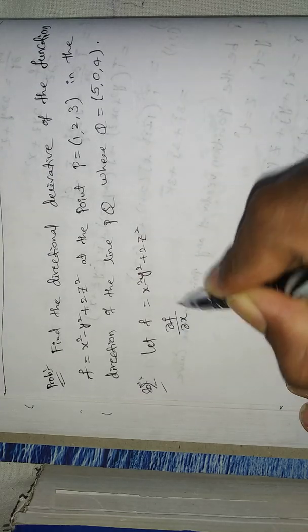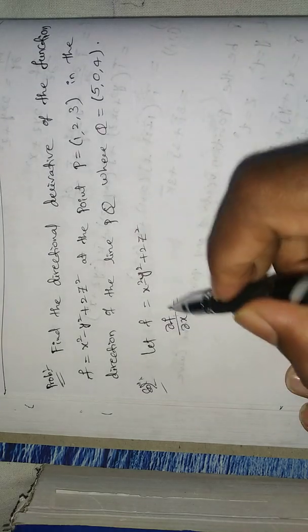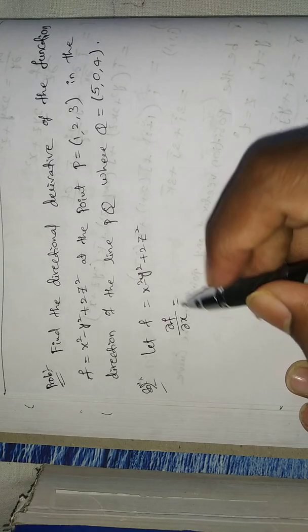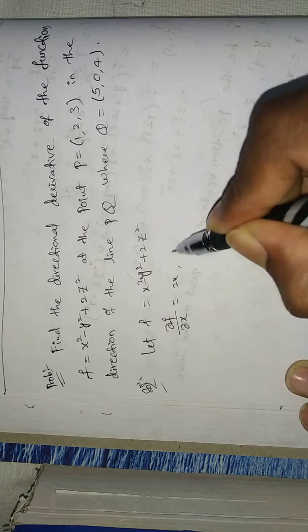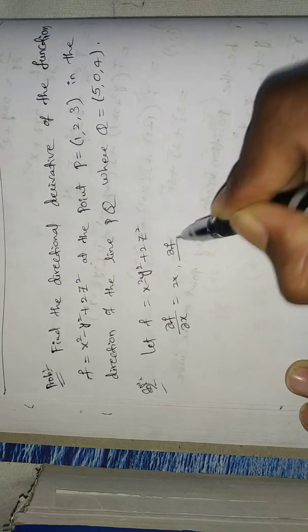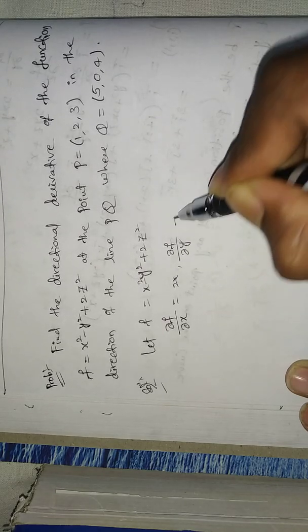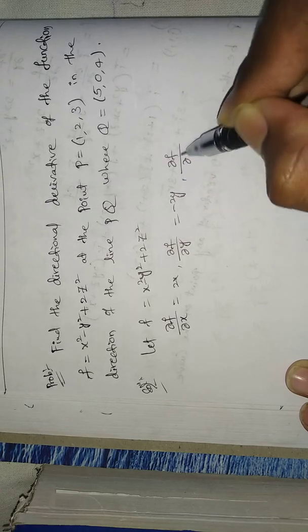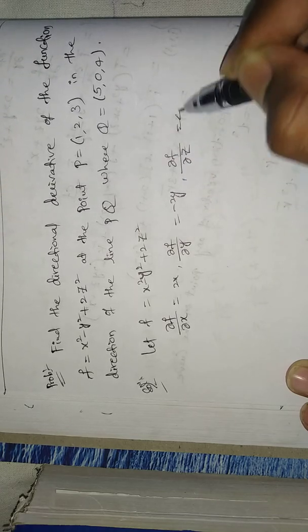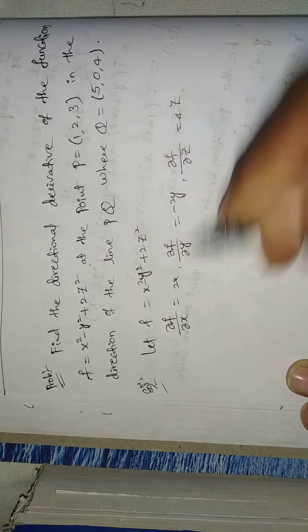Differentiating: ∂f/∂x equals 2x, ∂f/∂y equals minus 2y, ∂f/∂z equals 4z.